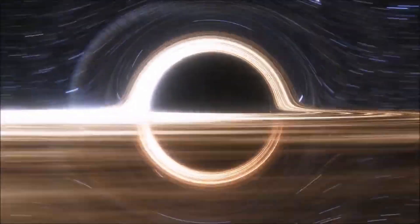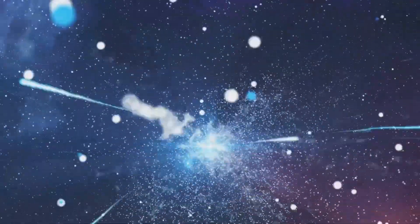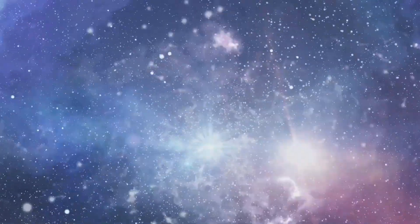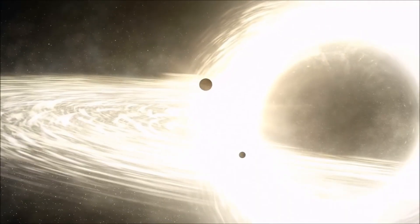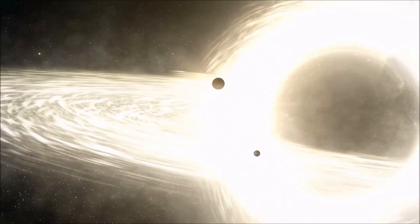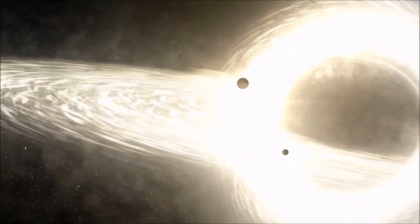Enter Stephen Hawking, who introduced a new element to the mix, black hole radiation. Hawking proposed a theory that flipped our understanding of black holes on its head. He suggested that these cosmic colossi were not just all-consuming voids, but they could also emit something. And that something was black hole radiation, or as we now call it, Hawking radiation.